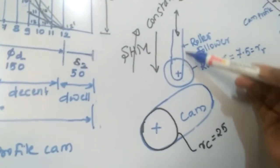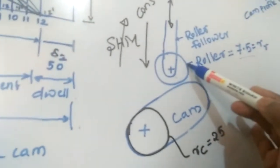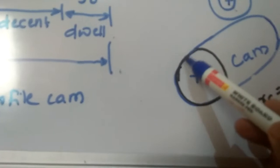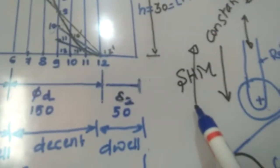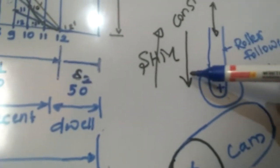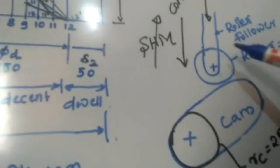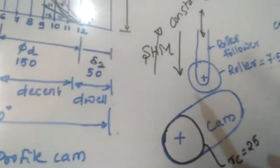This is a cam diagram. This is a roller follower, given as 7.5 as the roller radius. RC, radius of the cam, is 25 as drawn in black. When it rises, that is simple harmonic motion. When it returns the follower, it comes with constant uniform acceleration and deceleration. Rise is SHM, return is constant acceleration and deceleration of the follower. SHM, constant acceleration, deceleration, constant velocity, and cycloidal motion — these are all the motions of the follower, not the cam.